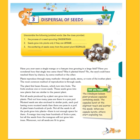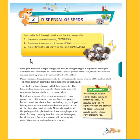Now we have an unscramble activity — unscramble the following jumbled words using the clues provided. The first clue is: the process of a seed sprouting. The correct word is germination. The second clue: seeds grow into plants only if they are — the answer is mature. The third clue: the scattering of seeds away from the parent plant — the answer is dispersal.